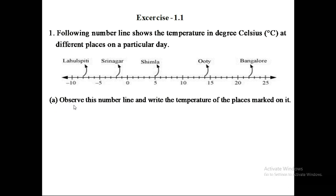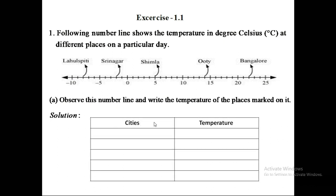Question (a): Observe this number line and write the temperature of the places marked on it. We are going to make a solution using a table for the temperature readings of the different cities. Observing the number line, Lahul Spiti is located at minus eight, so the temperature of Lahul Spiti is minus eight degrees Celsius. The temperature reading of Srinagar is at minus two on the number line, so Srinagar is minus two degrees Celsius.